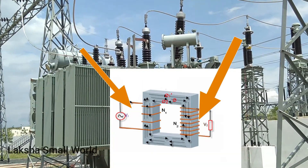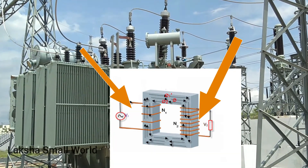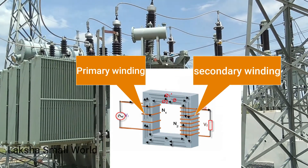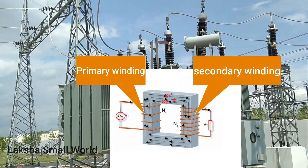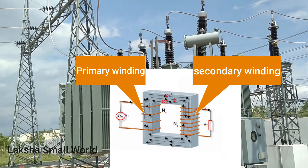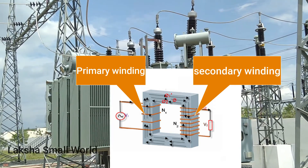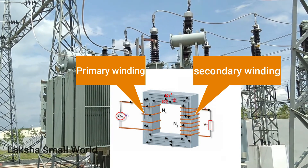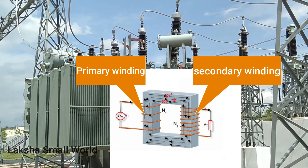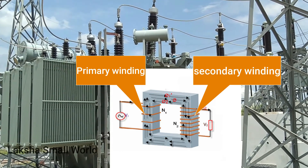These two are called windings. The winding connected to the source is called the primary winding — here the 132 kV side is the source, so we call it the primary winding. The winding connected to the load is called the secondary winding — here the 33 kV side is the load, so we call it the secondary winding.